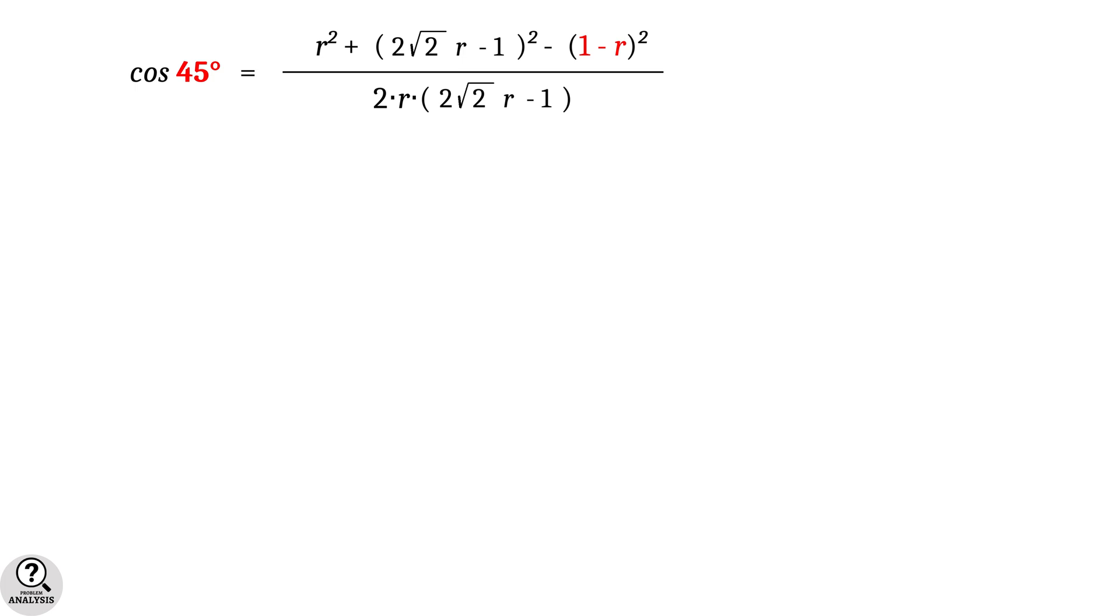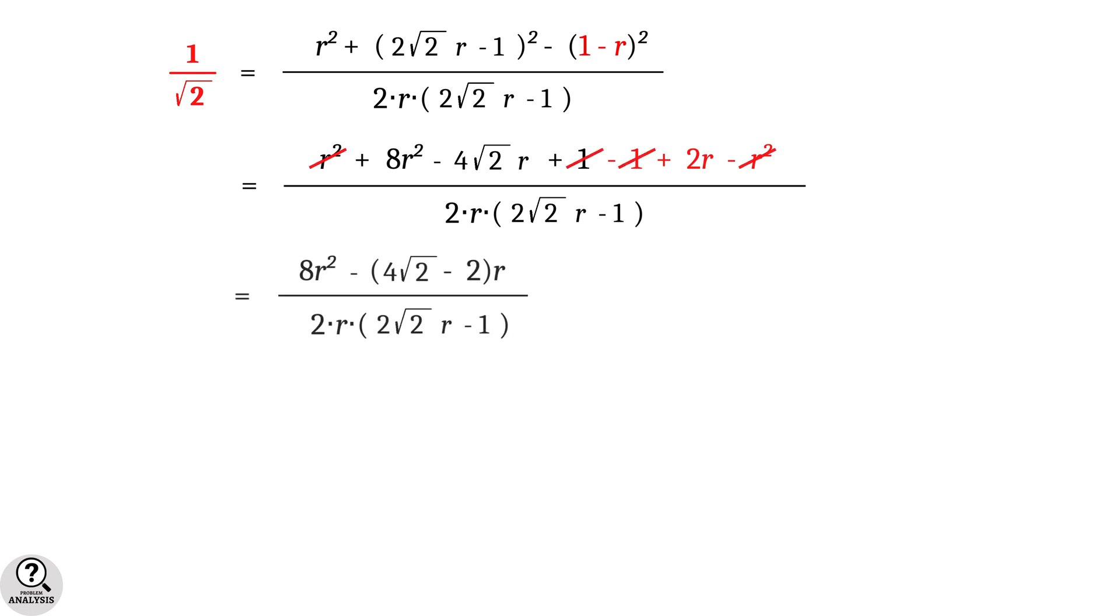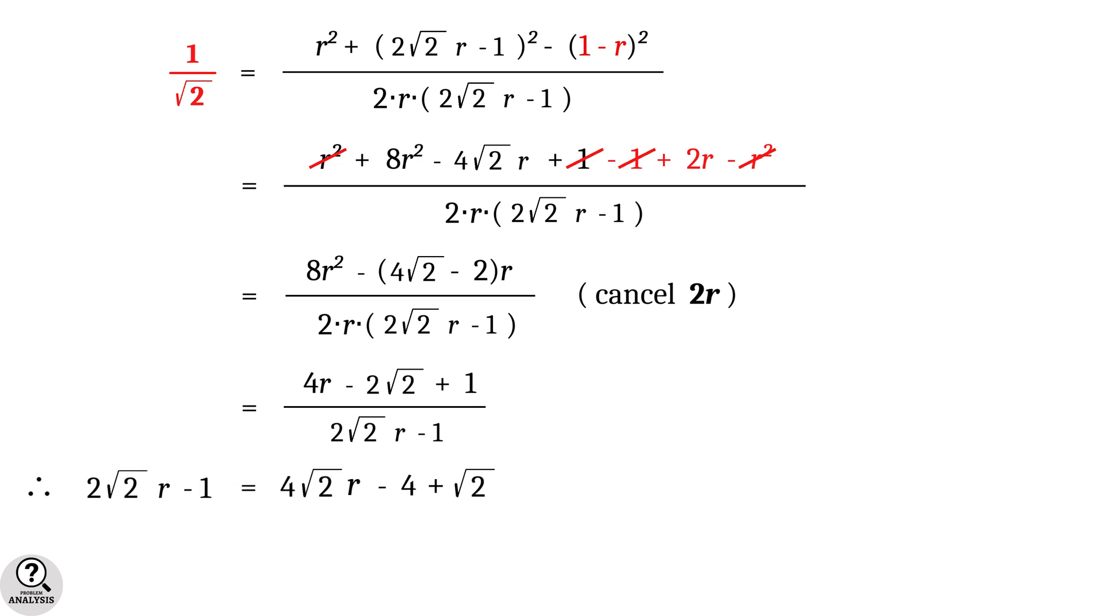Now, in this equation, cos 45 is a standard trigonometric value, which is equal to 1 by root 2. Now, expand the bracket, and cancel like terms with opposite signs. Finally, we get this expression. Cancel 2r from numerator and denominator and simplify the equation, which gives 2 root 2 r minus 1 equal to 4 root 2 r minus 4 plus root 2. That implies the value of r equal to 3 minus root 2 divided by 2 root 2, which is approximately equal to 0.56066 units.